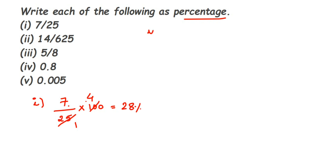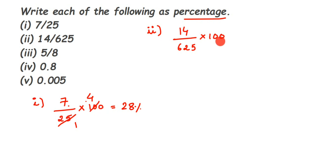Now the second question: 14 upon 625 — we have to find out the percentage. Again, percentage means multiply with 100. I'm going to cancel in the 25-table. Remember, 25 squared is 625, and like in the first question I cancelled 100 in the 25-table: 25 fours are 100 and 25 twenty-fives are 625.